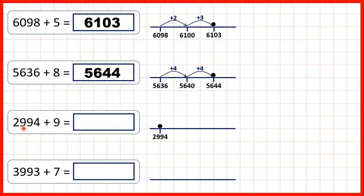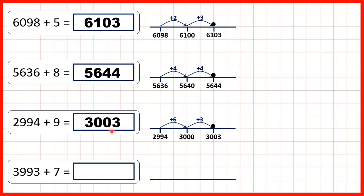Now, 2,994 plus 9. Adding 6 will take us to 3,000, because 4 plus 6 is 10, but we already have 9 tens in our number and 9 hundreds. So it's the thousands digit that needs to change as well. That's adding 6, and if we want to add 9, we need to add 3 more, to give us 3,003 as our answer.